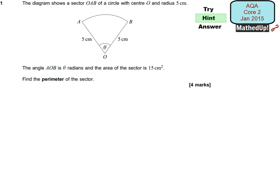The two formulas that we need for this: to work out the area, that's going to be equal to half r squared theta, and we also know the arc length is equal to r theta.